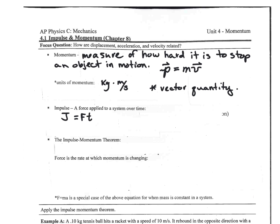This is the Physics 1 version. The calculus version is that J is equal to the integral of force over time — the integral of F(t) dt. Both impulse and momentum are vector quantities because force is a vector quantity, so impulse is also a vector quantity.